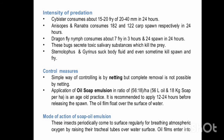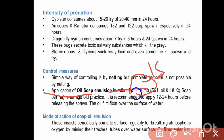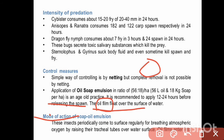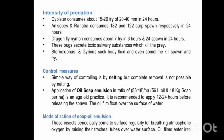Remember the ratio 56:18 or approximately 3:1. It is recommended to apply the oil-soap emulsion 12 to 24 hours before releasing the spawn. The oil film floats over the surface of the water. The mode of action: these insects periodically come to the surface for breathing atmospheric oxygen by raising their tracheal tubes. When they come to the surface, the oil film enters their breathing apparatus and kills them.